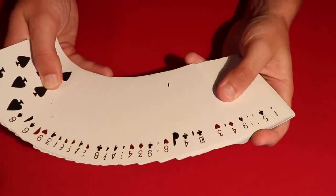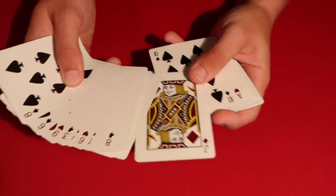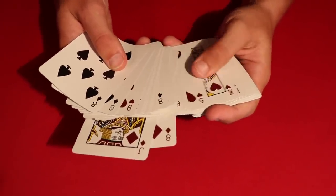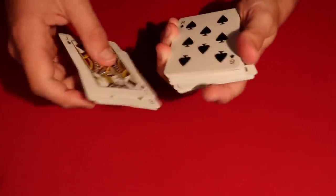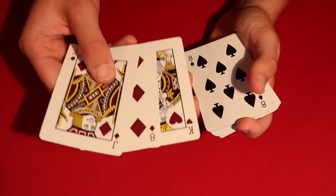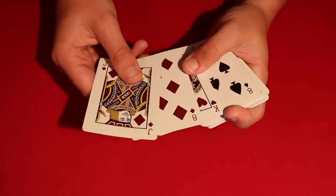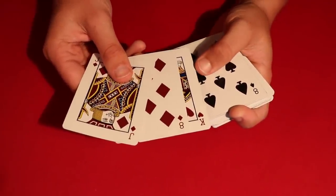Alright, so to start this trick off, all you want to do is go ahead and take the spectator and have them pick any three random cards from throughout the deck. So these are all face up. You don't have to shuffle the deck because they're all face up. The spectator can look at these three cards, make sure you remember them. We have the king of hearts, eight of diamonds, and the jack of diamonds.